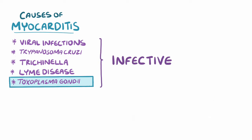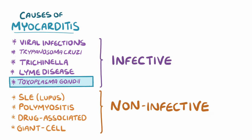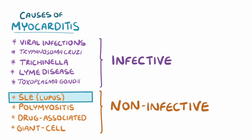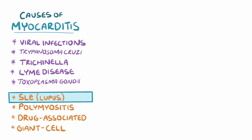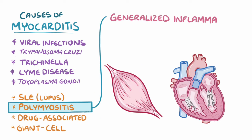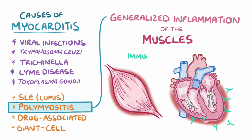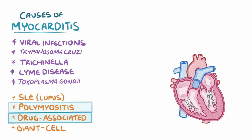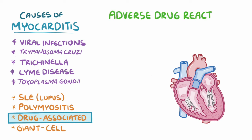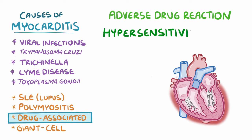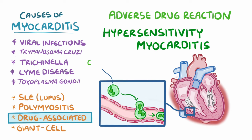Those are the infectious causes, but there are also non-infectious causes of myocarditis. These include systemic lupus erythematosus, also known as lupus, and polymyositis, which is a generalised inflammation of the muscles, where the immune system starts to attack the myocardial layer of the heart. There's also drug-associated myocarditis, which means there's an adverse drug reaction that inflames the heart. Drug reactions cause a hypersensitivity myocarditis, which is when eosinophils get into the blood vessels in the myocardium.